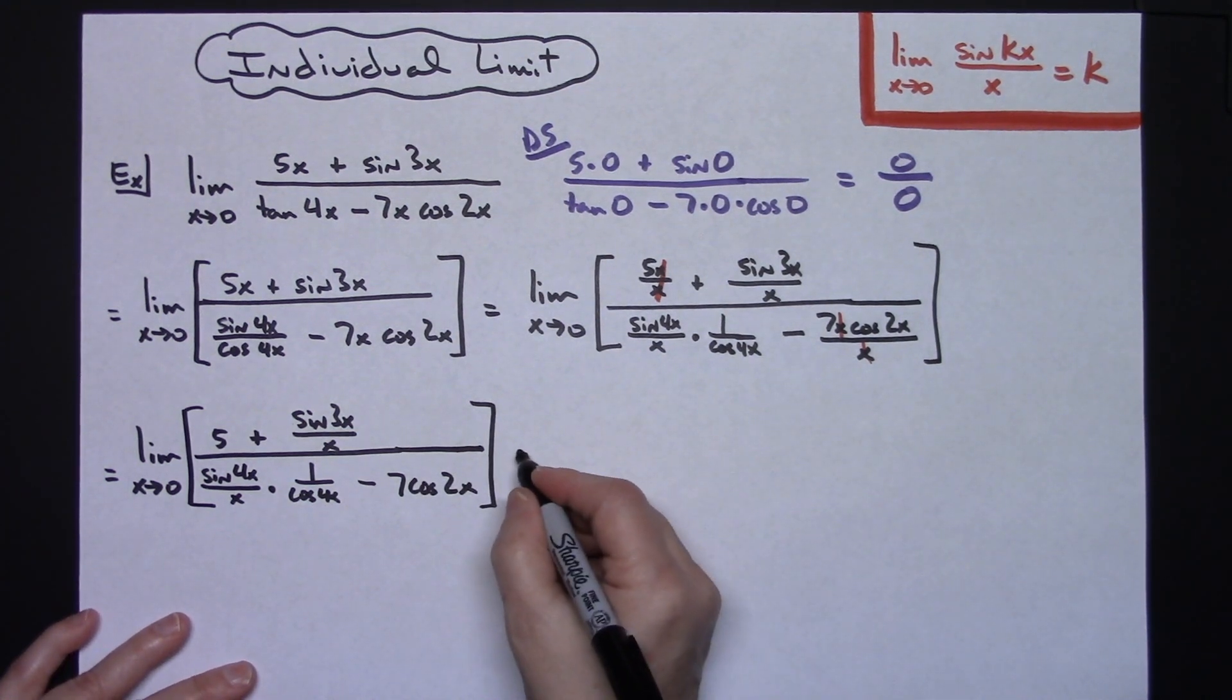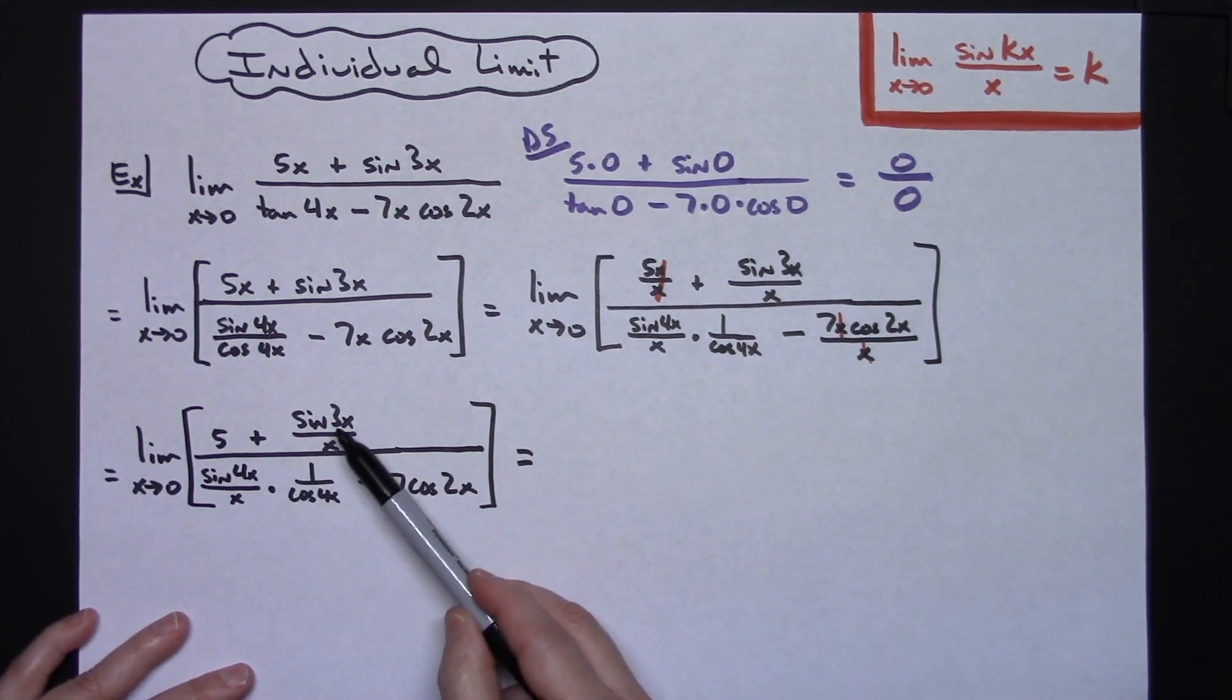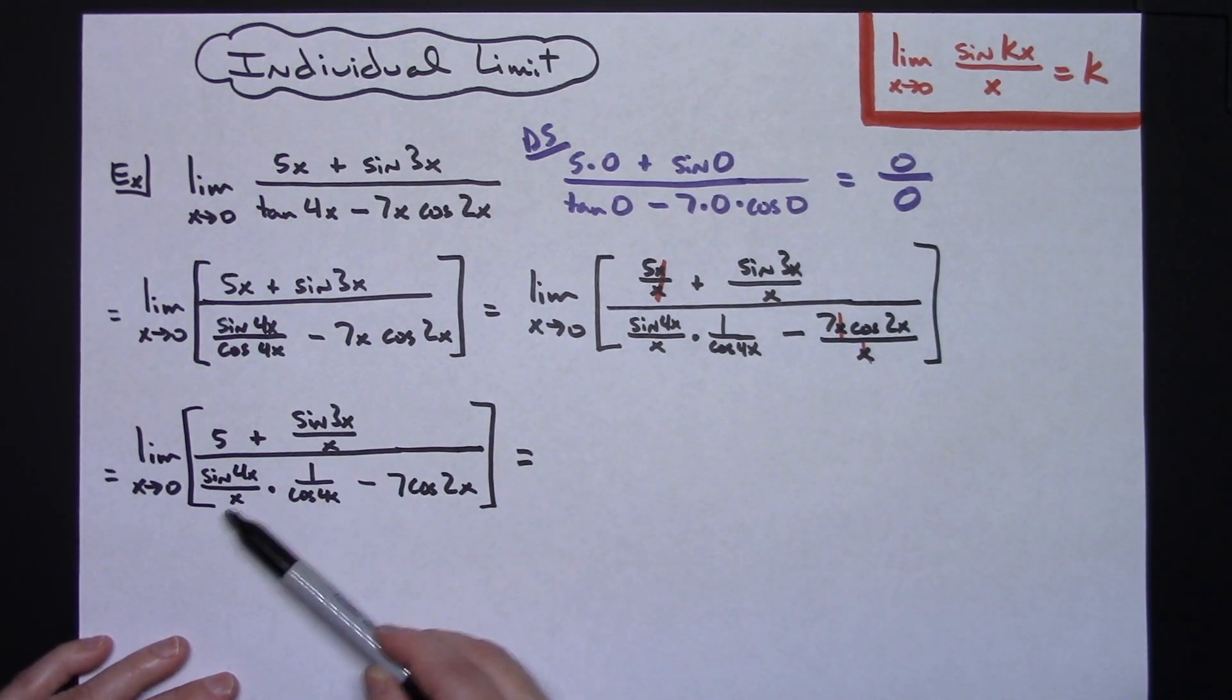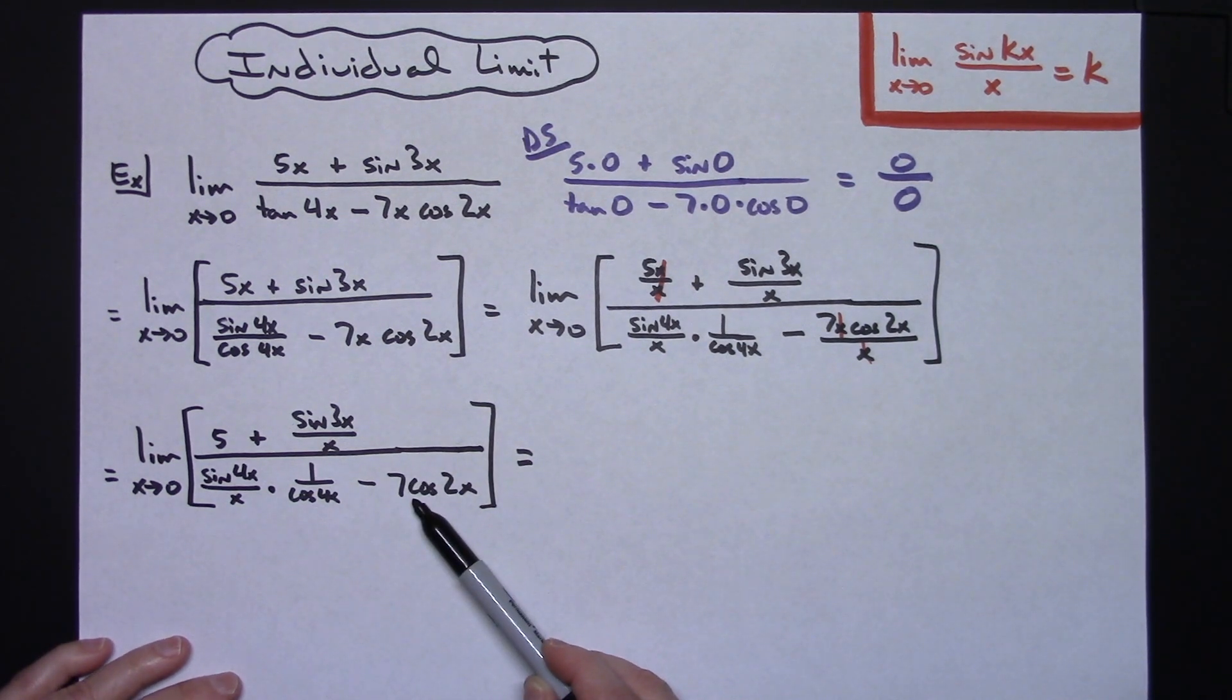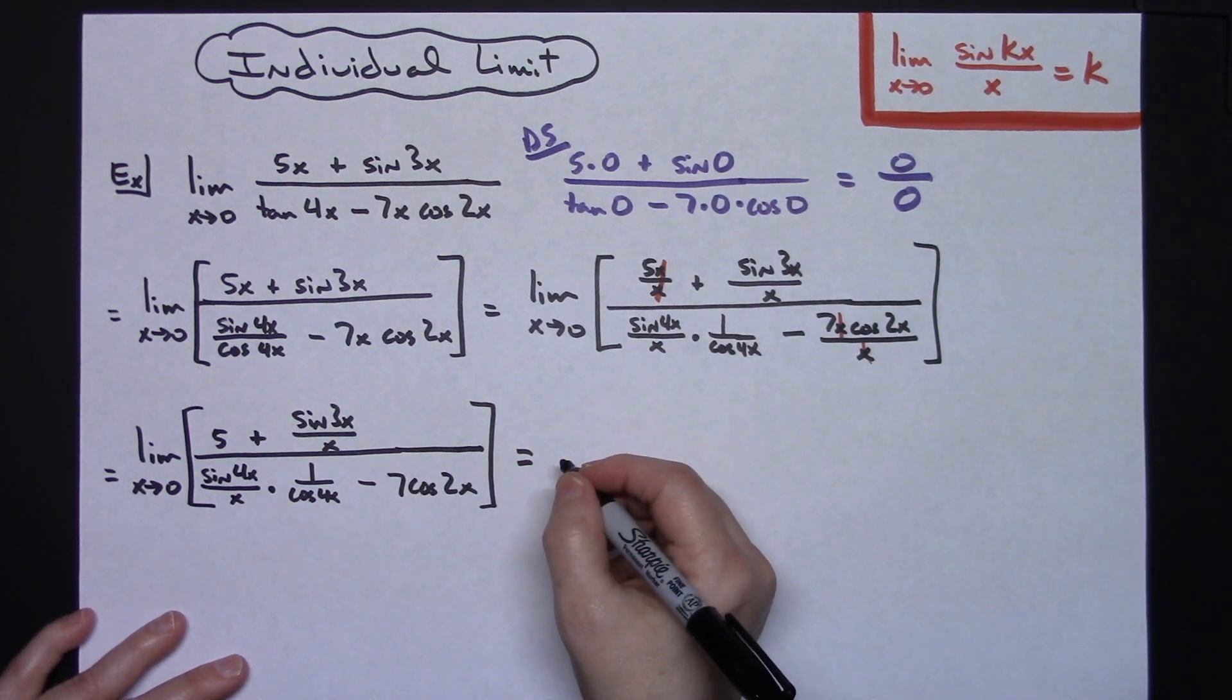Now doing this, now I can see that this part is going to go to 3. This part right here is going to go to 4. Here and here I can do a direct substitution. So I'm actually ready to start calculating the limit here.